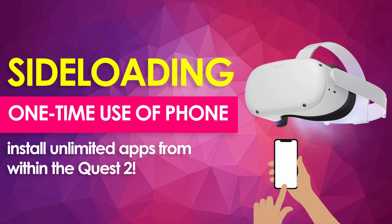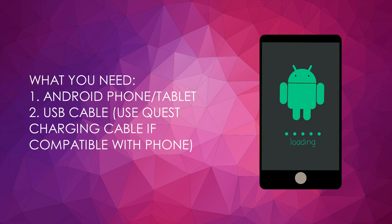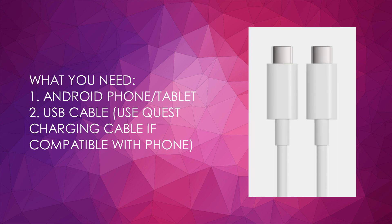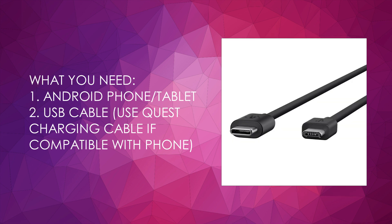I already have this in some of my videos but only as a part of a bigger process, so I've decided to make a separate video on this. I also added a few things so you won't need your phone again to install more apps in the future. In this tutorial, you will need a one-time use of an Android phone or tablet. You will also need a USB cable. If your phone uses a Type-C cable for charging, you can use the Quest charging cable. If you're using an older Android phone that uses a Micro-USB cable, you can get a USB-C to Micro-USB cable or you can also get an adapter.